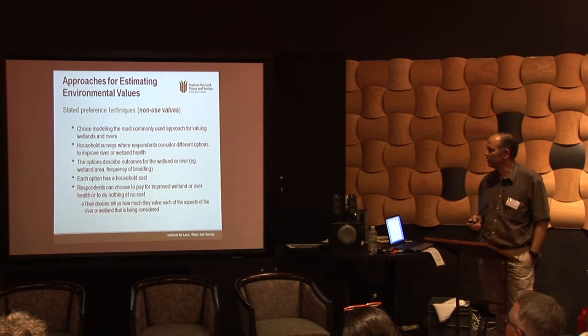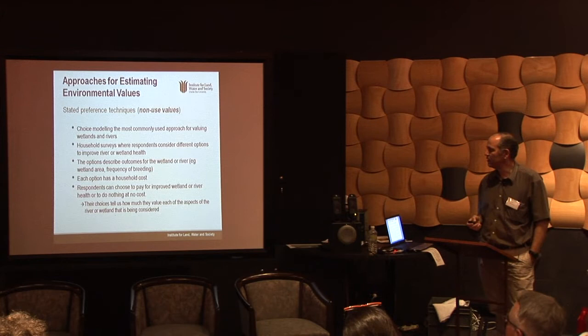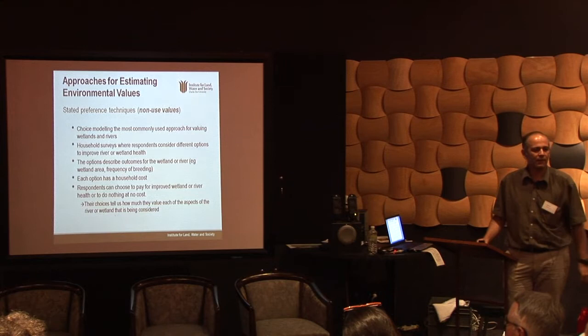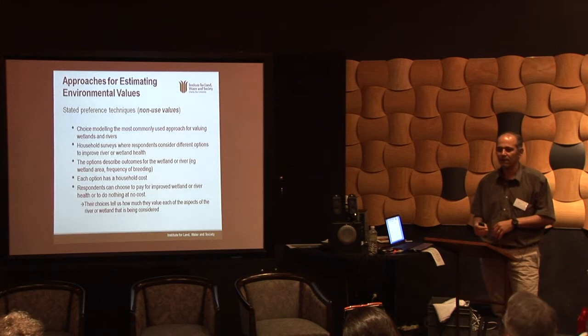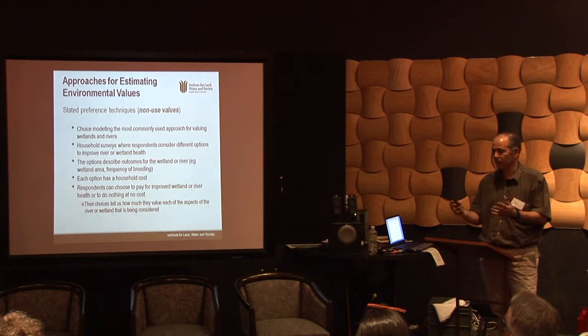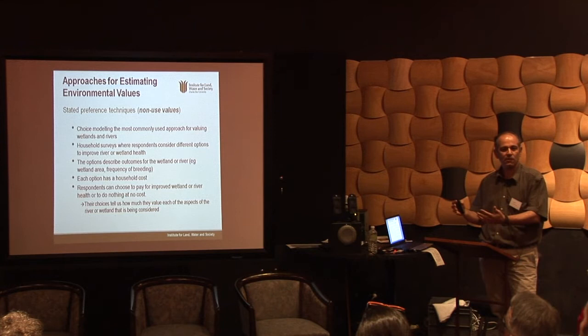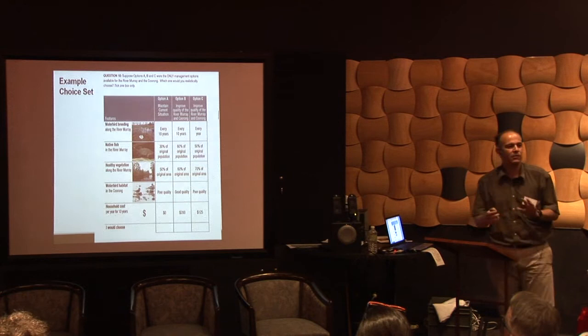The last class is stated preference techniques. The main technique here is called choice modelling. Think of it like being at a car auction — you sit there all day, see a lot of cars being sold, and you figure out how much people pay for a newer, safer, or trendier car, or one with five airbags rather than two. You just observe it. What we do here is present people with many choices about wetland health improvements, defined in certain outcomes, that come at a cost. People make many of these choices, and that tells us something about their value.